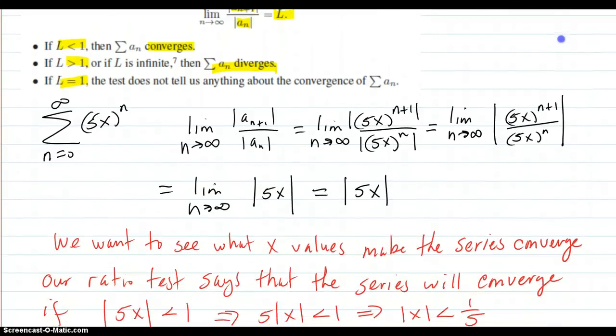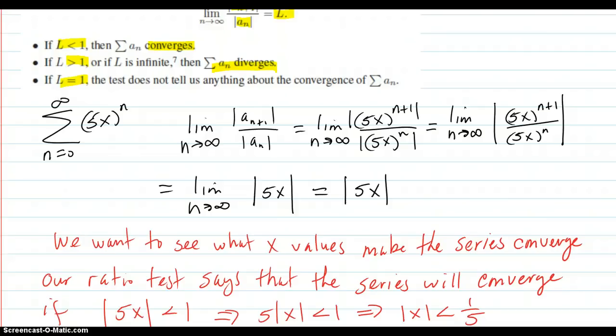Let's take our series and apply the ratio test. Here's the series. Ratio test: a_{n+1} over a_n, absolute value. Plug in what it is: 5x to the n plus 1 power here, divided by absolute value of 5x to the n.